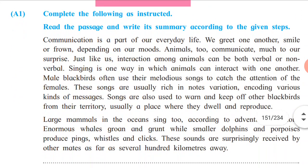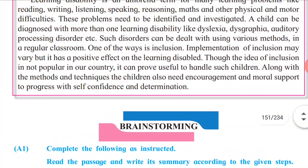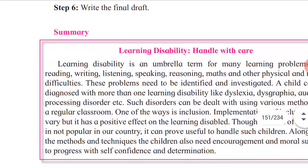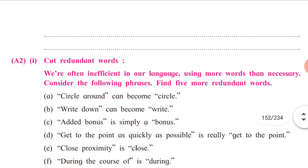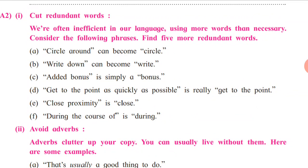For your practice, one more passage is given here. You have to read the passage and write its summary according to the steps we have seen. Now, cut the redundant words — the words which are not required. For example: 'circle around' can be just 'circle'; 'write down' can be just 'write'; 'added bonus' can be just 'bonus'; 'get to the point as quickly as possible' is really just 'get to the point'; 'close proximity' means 'close'; and 'during the course of' means 'during.' They want you to write five more examples of redundant words.